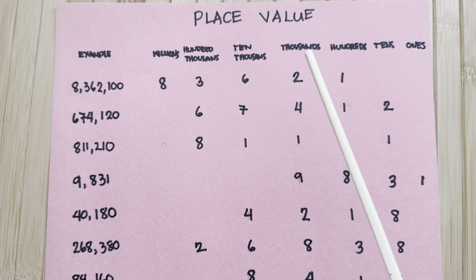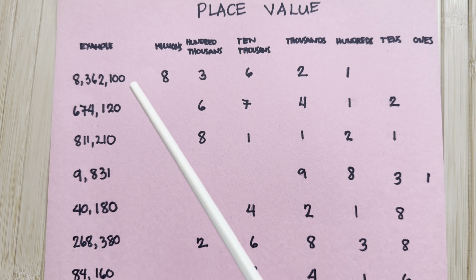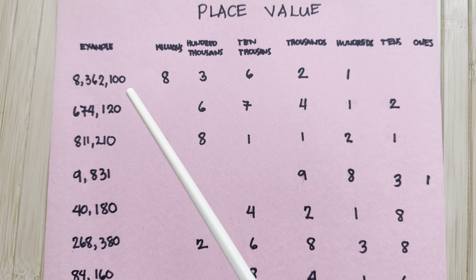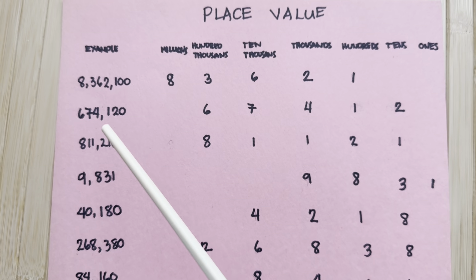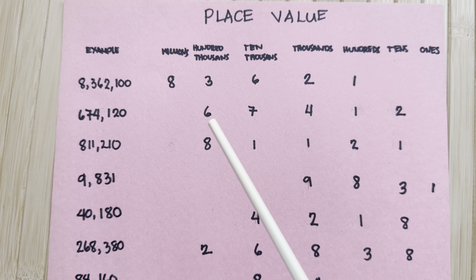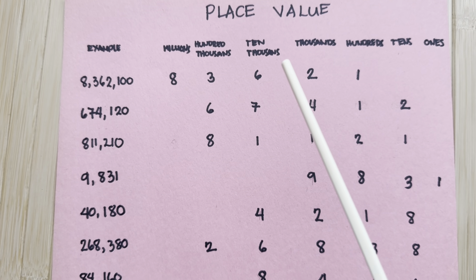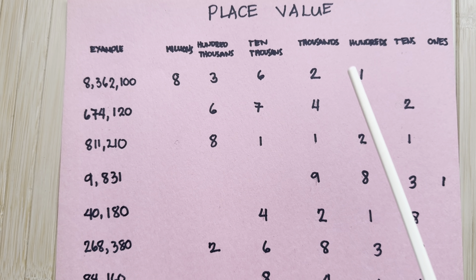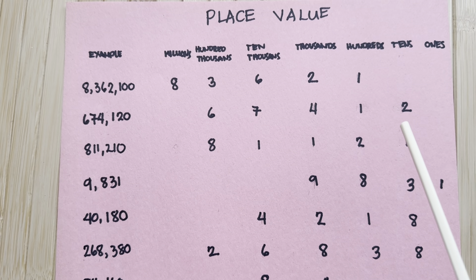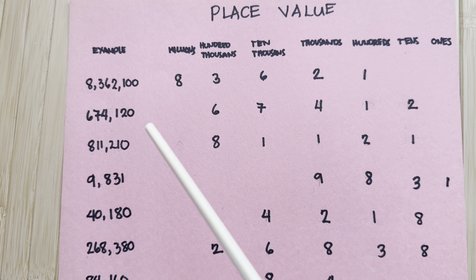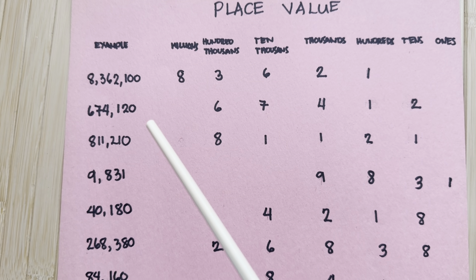Let's go with example number 2: 600,000 plus 10,000 plus 1,000 plus 1,000 plus 10,000 plus 2,000 is equal to 674,120.